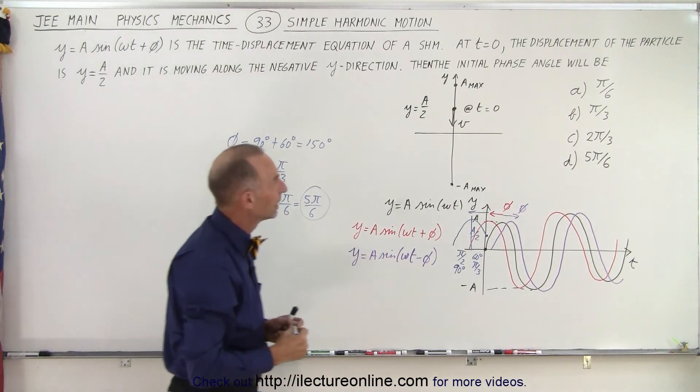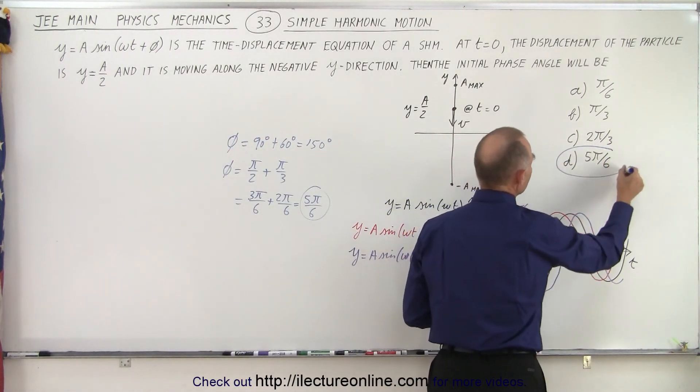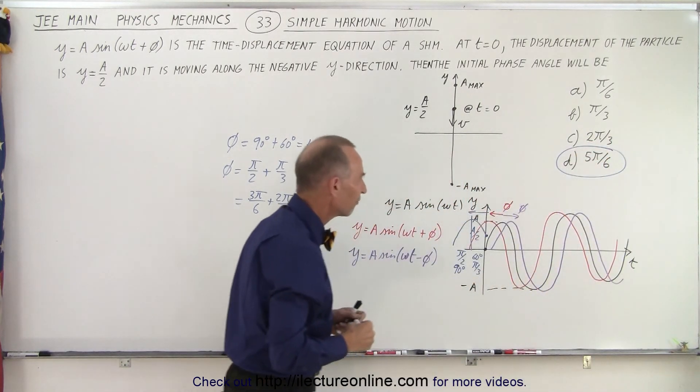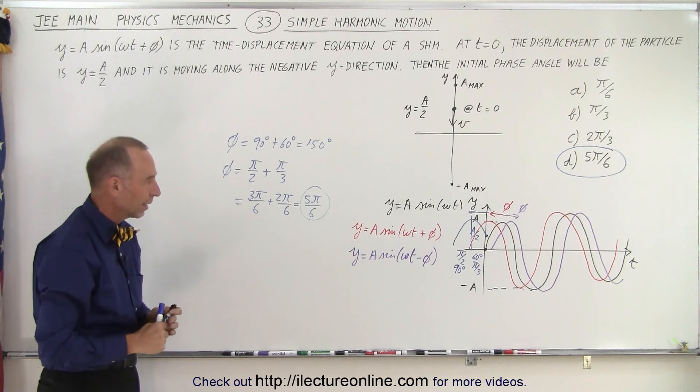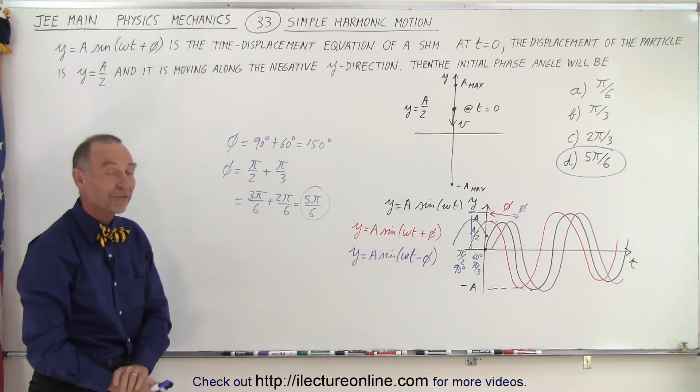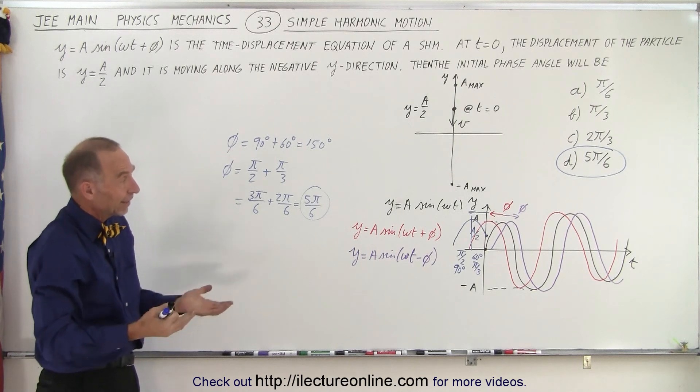Now, is that one of the answers? Let's see here. Yes, it is right here. Answer d gives us the correct phase shift, shifting the whole curve to the left by 150 degrees or five pi over six, and that is how it's done, I think, in the most easy fashion.